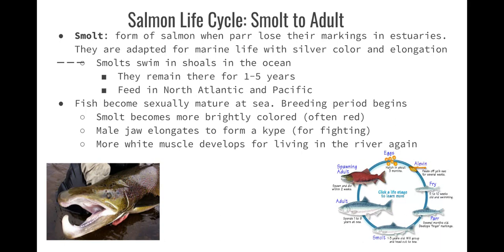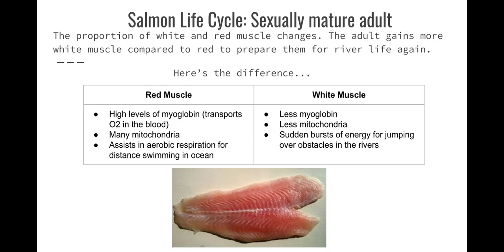White muscle is for short, quick, heavy bursts of energy. For sexually mature adults, their muscle composition changes: red muscles have a lot of myoglobin to transport oxygen and many mitochondria for constant energy — great for aerobic respiration swimming long distances in the ocean. White muscle has less myoglobin and fewer mitochondria because it's used for sudden bursts of energy, like jumping out of the river over an obstacle.